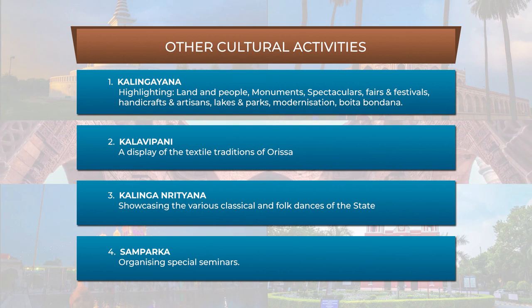The second main cultural event was the Kalawipani — a display of the textile traditions of Orissa, especially the tie and die work, the ikat work, and the weaving techniques of Orissa's artisans. The next event was the Kalinga Nrithiyayana — the showcasing of classical and folk dances of the state. Orissi was displayed, as was Zatariya from Assam, and other folk dances of the state were included in showcasing the performing arts of Orissa.